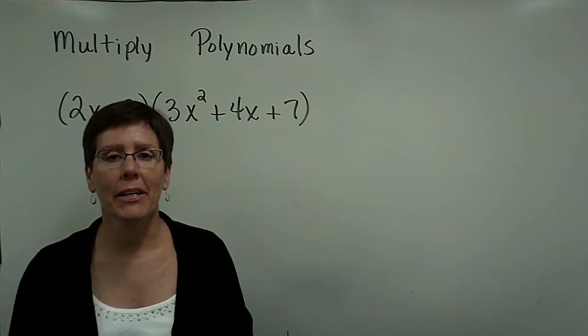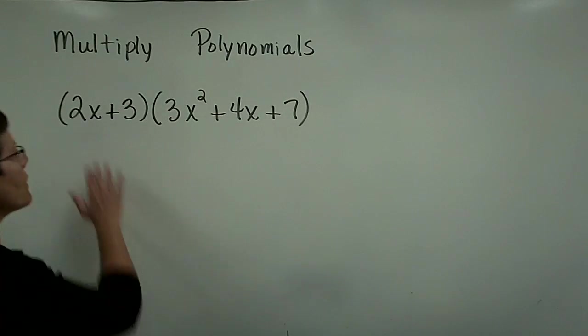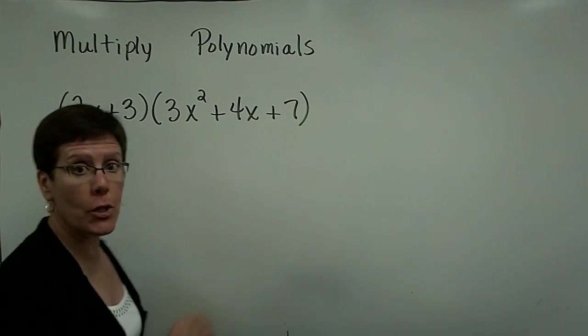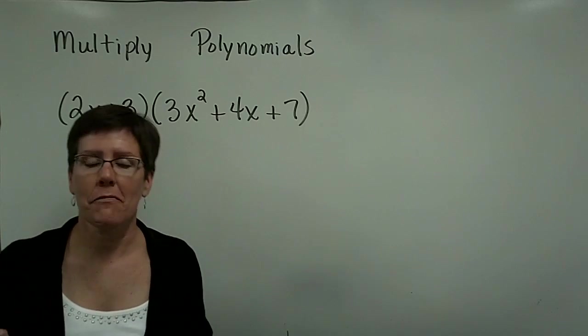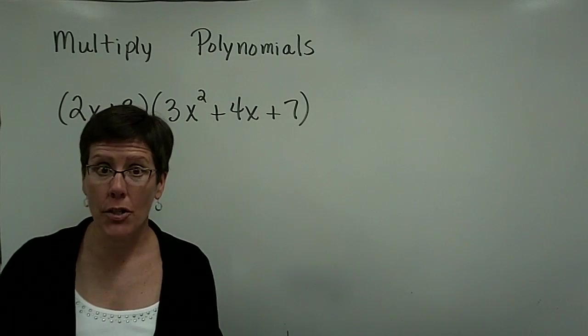Let's finally multiply any two polynomials. In this example, I've got a binomial times a trinomial. It's kind of like that foiling process, we just don't have an acronym for it.